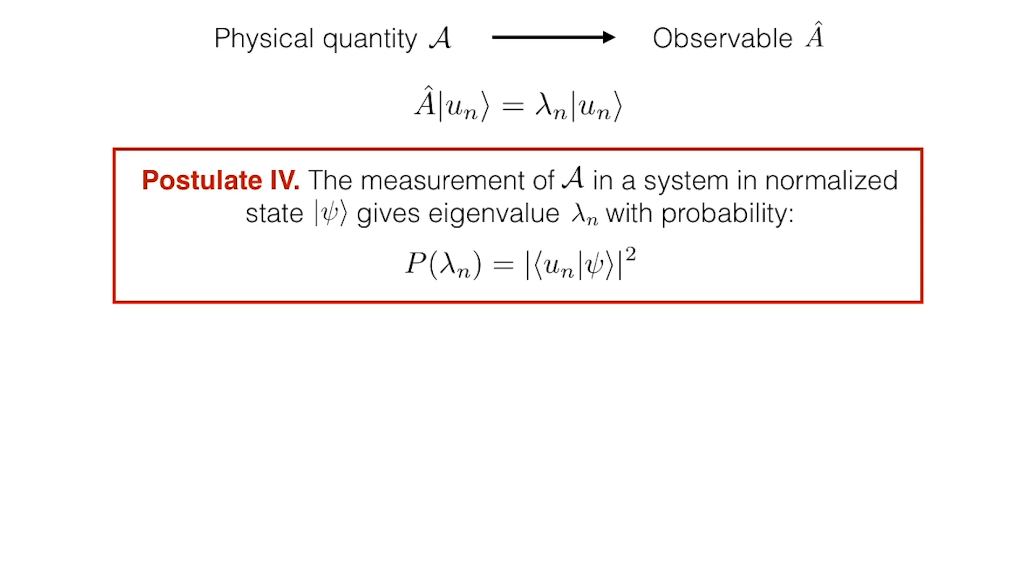The general setup is that we consider a physical quantity A that in quantum mechanics is represented by a Hermitian operator A-hat, called an observable. We call the observable A-hat to keep the discussion general, but in reality this will be something like the position or the momentum of a particle. The observable A-hat obeys this eigenvalue equation, where lambda n are the eigenvalues and u n the eigenstates.